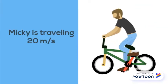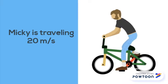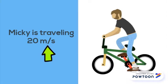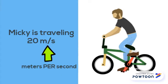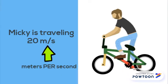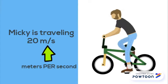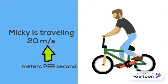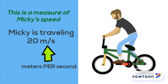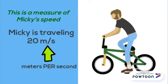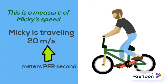Let's try some examples. Here we have Mickey. He is traveling at 20 meters per second. Anytime you see that m/s, you say that as meters per second. What do you think this is a measure of — his speed, velocity, or acceleration? This tells us how fast Mickey was going without his direction, making it his speed.